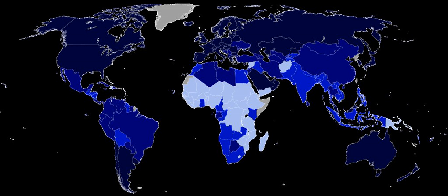Finally, the HDI is the geometric mean of the previous three normalized indices: HDI = (LEI × EI × II)^(1/3). Key variables include: LE — life expectancy at birth; MYS — mean years of schooling for persons aged 25 or older; EYS — expected years of schooling for children under 18; and GNIpc — gross national income at purchasing power parity per capita.